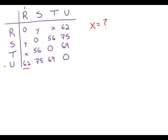We're looking for X, and notice that X is the distance between city R and city T. Statement number one tells us that by the most direct route, the distance between S and T is 56, which equals twice the distance between R and S, which is Y. So 56 equals 2Y. This would allow us to solve for Y, but knowing the value of Y would not necessarily help us find X. So this statement by itself is insufficient.